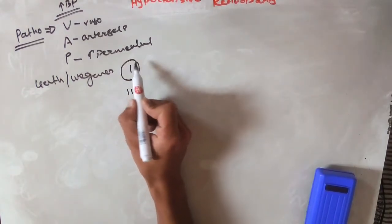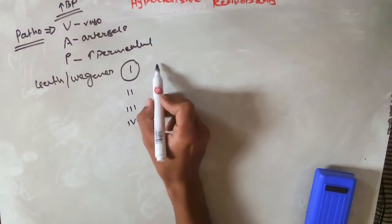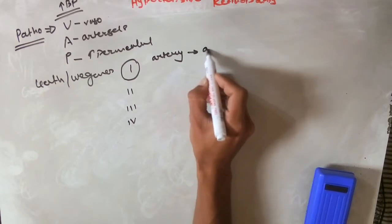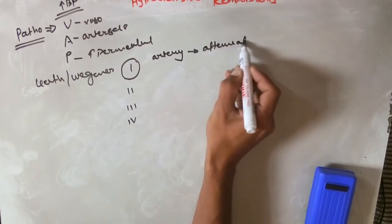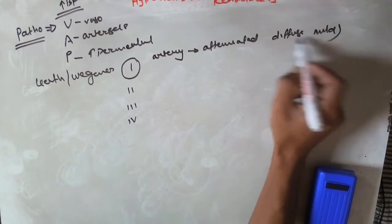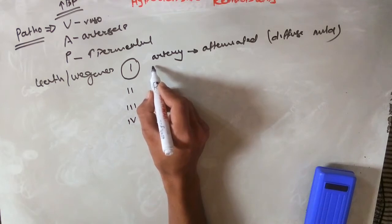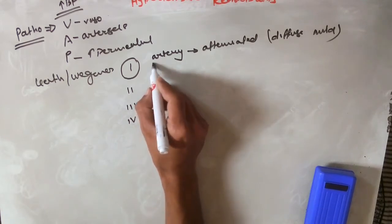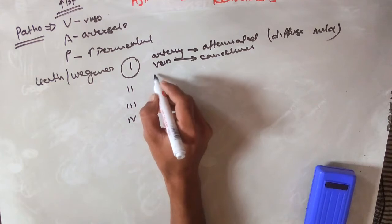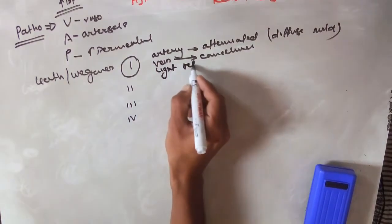In grade one, we look for AV crossing changes and arterial attenuation — meaning diffuse, mild narrowing of the artery. There is also a mild form of light reflexes seen. To remember this, use the mnemonic VAL for grade one.